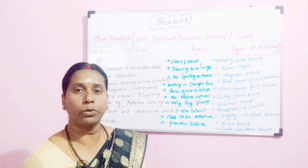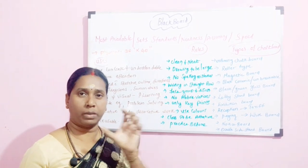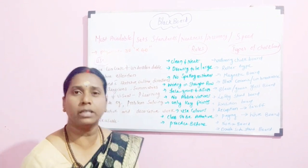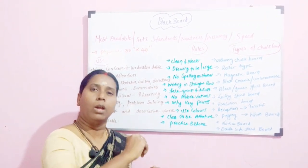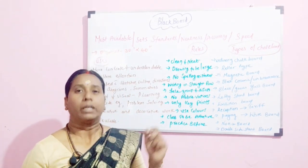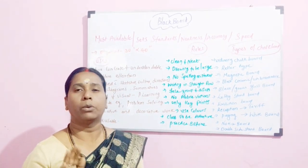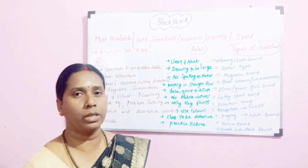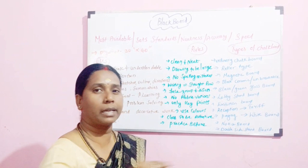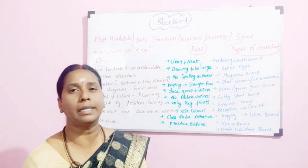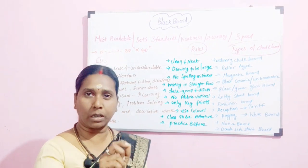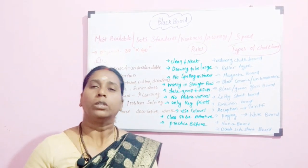It has to be written in full form. Then, face the group and discuss. When the teacher is writing something, she has to write on the board, look at the student, and then talk. Not writing and talking at the same time — that is a very bad principle of using a blackboard. She is not supposed to write and talk because when she is turned away, students may not hear or understand. Always finish writing first, then talk with the students.